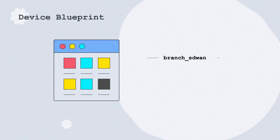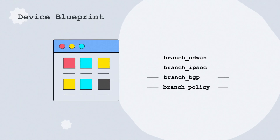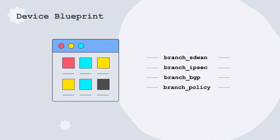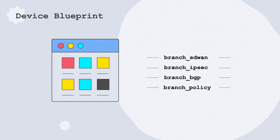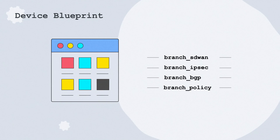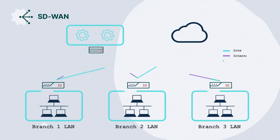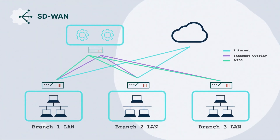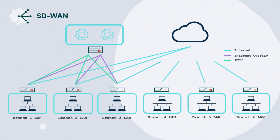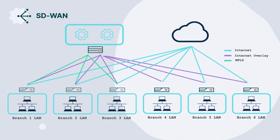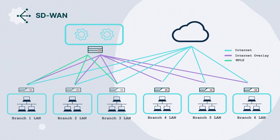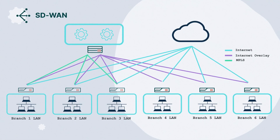Network admins can also take templates generated by the SD-WAN overlay wizard and apply them to new devices for true zero-touch provisioning. This allows one-to-many mapping of an SD-WAN configuration to new device deployments to help reduce onboard times for new branch offices.